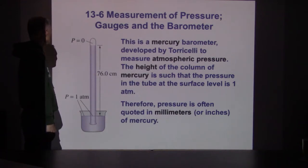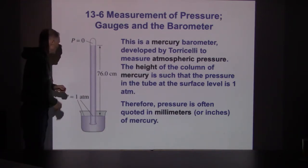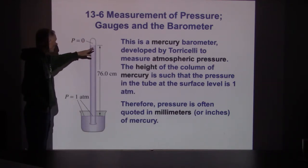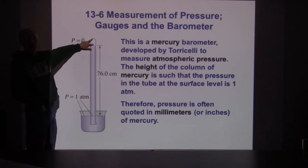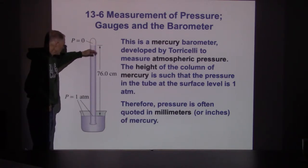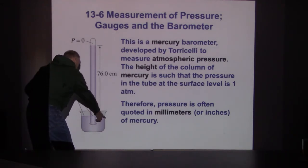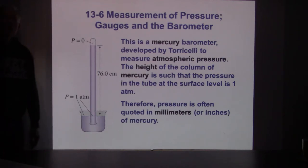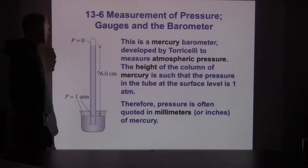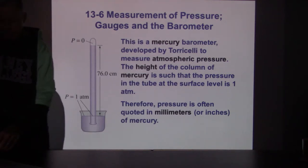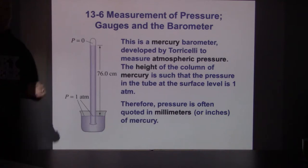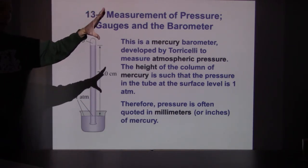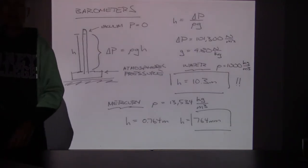Here is a mercury barometer — that's where those millimeters of mercury units come from. Hundreds of years ago, researchers found you could take a bucket of mercury, fill a tube with mercury, and invert it into the bucket. By inverting it, there's a vacuum inside. The mercury falls a little bit, but then the outside atmospheric pressure pushing down on the mercury supports that column. When they measured it, one atmosphere of air could support 760 millimeters of mercury.